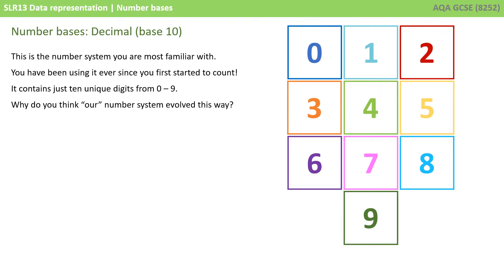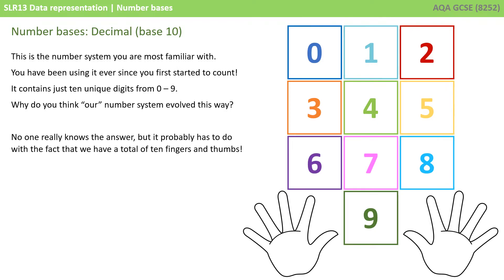Have you ever stopped to consider for a moment why our number system has evolved this way? Well, the actual answer is that no one really knows, but it is most likely to do with the fact that we have a total of 10 fingers and thumbs, and so it became quite natural to count off the numbers 1 through 10 on our fingers.